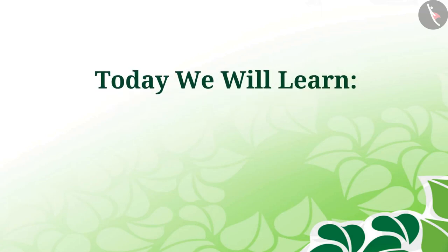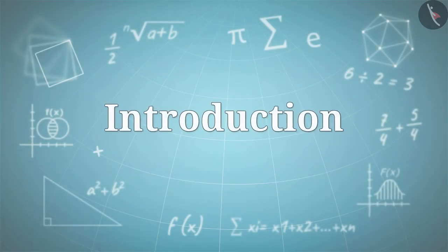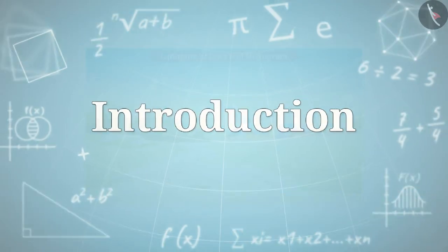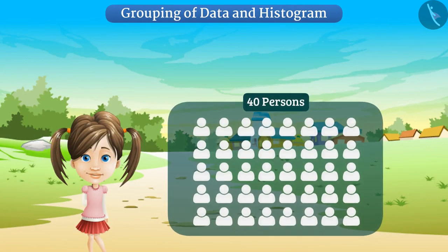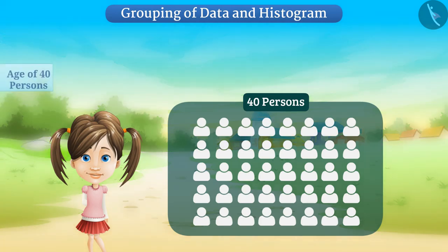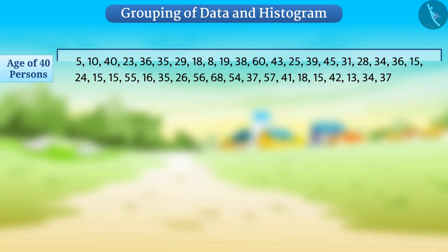Today we will learn grouping of data and histogram. Disha found the age of 40 persons living in her colony from which she got the following numbers. Such a collection of numbers collected to get desired information is called data.